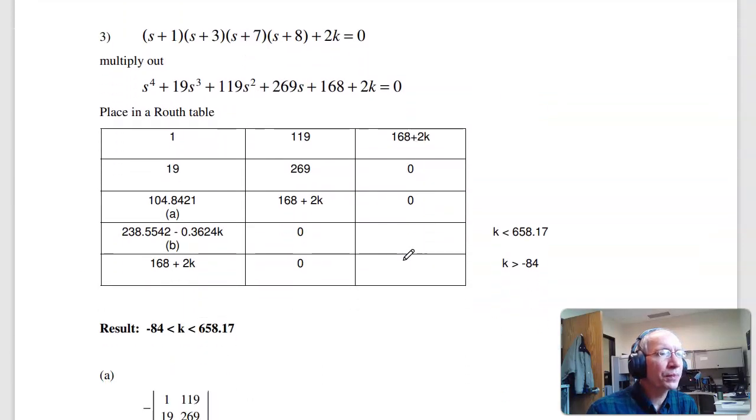Problem 3. If I have this fourth-order polynomial, multiply it all out, and so here's the s to the fourth term, s squared and 1, then s cubed, s, and 0.